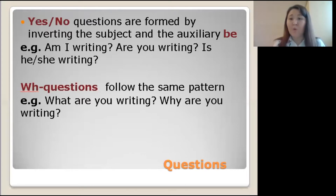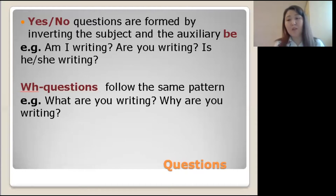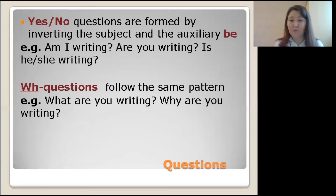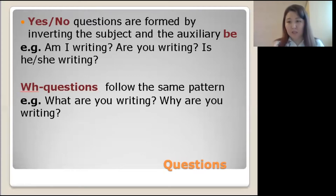Questions with question words follow the same pattern. For example: 'What are you writing?' or 'Why are you writing?' The auxiliary verb is inverted and placed before the subject, but we put the question word before the auxiliary verb 'be.' So the structure is: question word + auxiliary verb 'be' + subject.